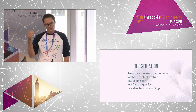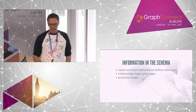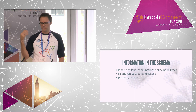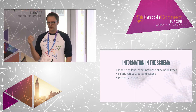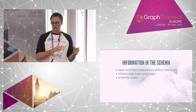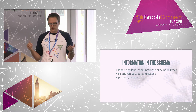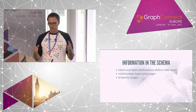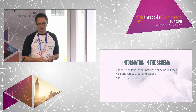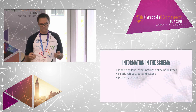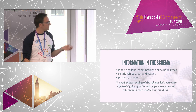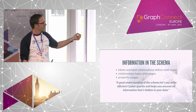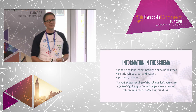What is the information that we can get from the schema? The schema should tell us what label or labels a node of a certain type has in the database and how these types are used. It can also tell us what relationship types to use for which types of nodes, and which properties are used for which node type and relationship type. A good understanding of the schema lets you write efficient Cypher queries and helps you uncover all the information hidden in your data.